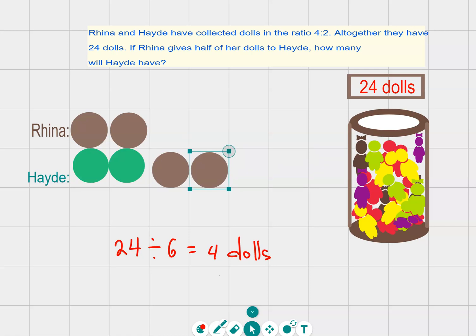So how many dolls does Heidi have? Heidi has 4 counters now. So that means she has 4 times 4 dolls per counter. So she has 16 dolls in total.